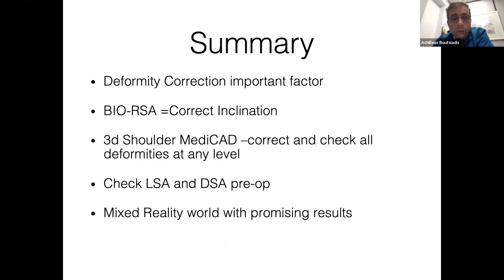In summary, we need to correct every deformity — this is a very important factor. We can use bio-RSA or metal augments. With MediCAD 3D shoulder planning, you can check and correct deformities many times before the operation, seeing how much you lateralize or distalize. By using the software combined with mixed reality, we can achieve reproducible and promising results in the future. Thank you for your attention.